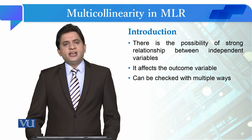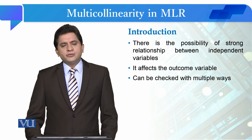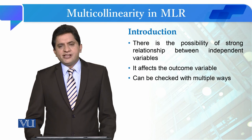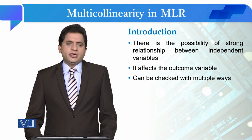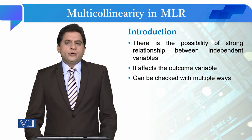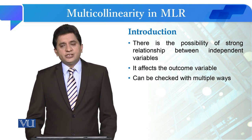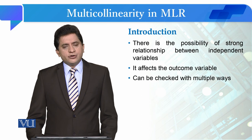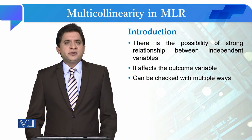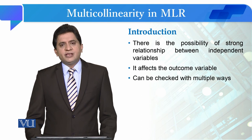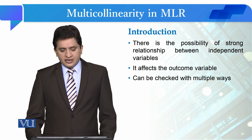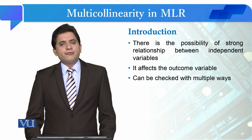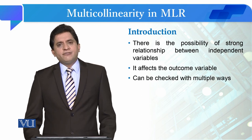Multicollinearity is the possibility of a strong relationship between independent variables. Multicollinearity ka matlab yeh hai ke aap ki jo independent variables hain unke darmiyan ho sakta hai ke ek strong significant relationship ho aur wo linear nature ki ho. To agar unke darmiyan ek strong significant relationship hai to wo aap ki dependent variable ke variance ko explain karne mein effect karega. Is liye yeh bada zaroori hai ke hum is ko check karein before interpreting the results of MLR.